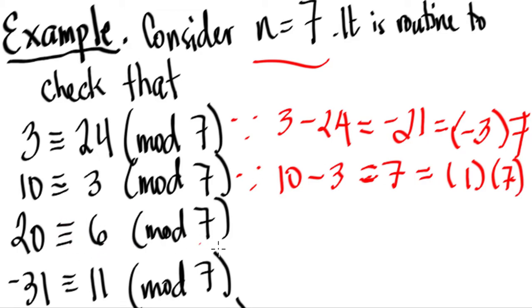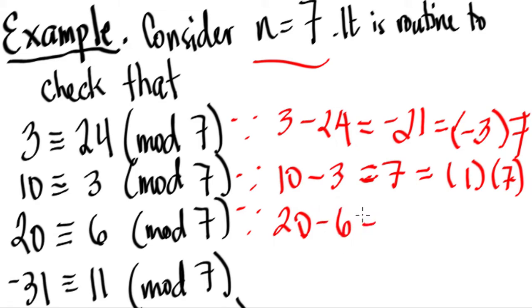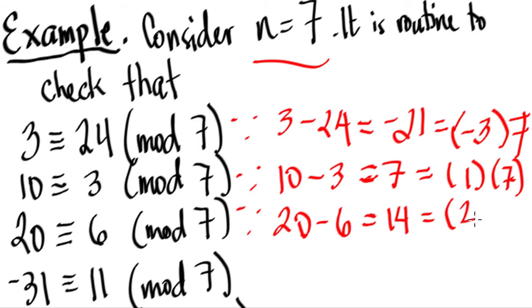How about this: 20 is congruent to 6 mod 7. Because 20 minus 6 equals 14, and 14 equals 2 times 7. So that checks out as well.